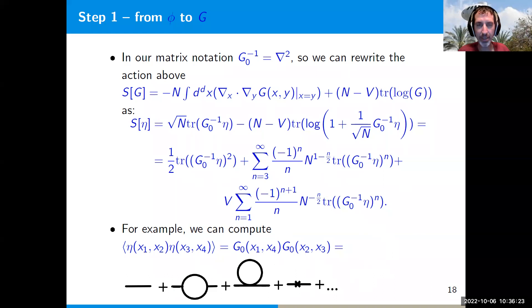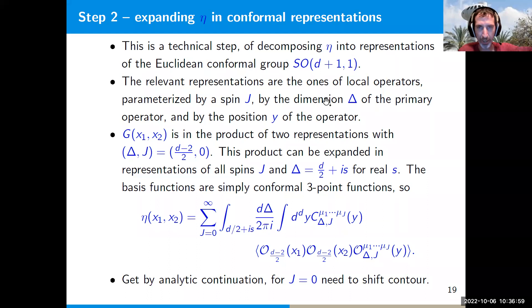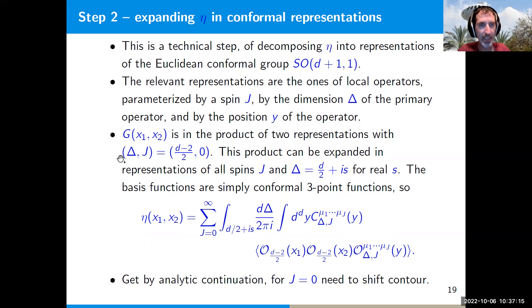The second step is a technical step of taking this bi-local η and decomposing it into representations of the Euclidean conformal group SO(d+1,1). The relevant representations are the usual ones of the conformal group: specified by a primary operator with dimension Δ, spin j, and position y, from which we build representations by acting with generators on that primary.